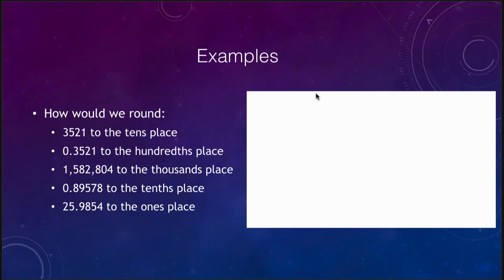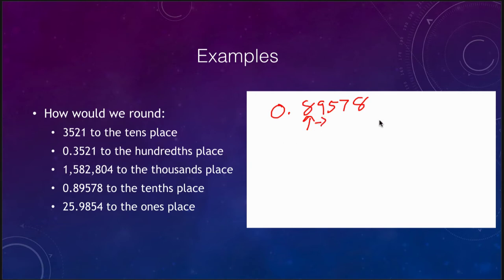Next example: we have 0.89578 and we want to round it to the tenths place. We look at the number to the right, which is a nine. Because that is five or greater, we increase this digit by one, so it becomes 0.9. Because we're to the right of the decimal place, we drop everything. So we drop the rest of those numbers and our answer rounded to the tenths place is 0.9.